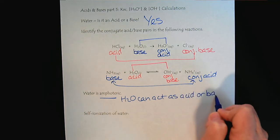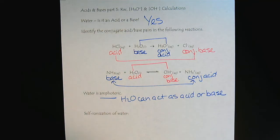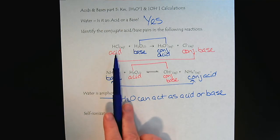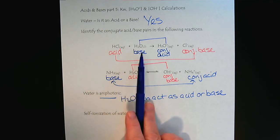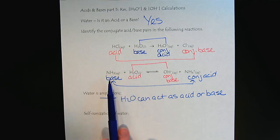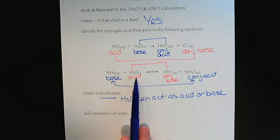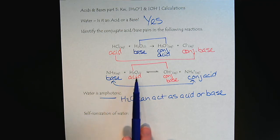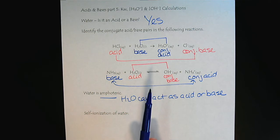So it depends. Everything's relative. So in this first example, hydrochloric acid is a stronger acid than water. So water takes the role of the base. In the second example, ammonia is a stronger base than water. So water takes the role of the acid. So water plays off the other elements in the reaction.